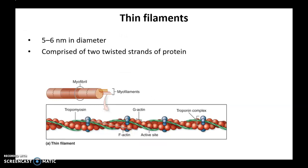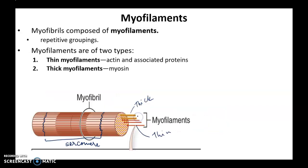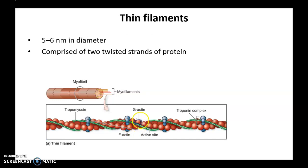Now zooming into the thin filament — as mentioned at the beginning, thin filaments are made up of actin proteins along with associated proteins. A thin filament is made up of two twisted strands of proteins — imagine two pearl necklaces twisted together. Each red ball is a G-actin molecule, and each strand or pearl necklace is called an F-actin.